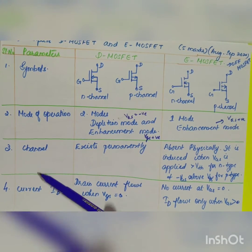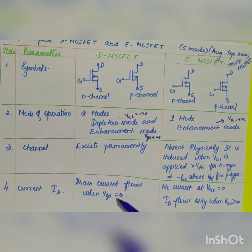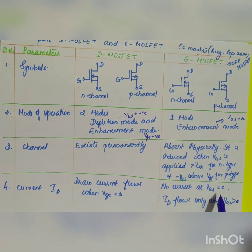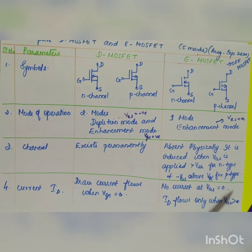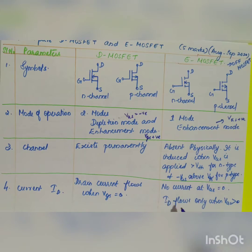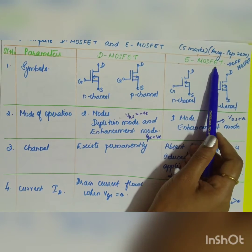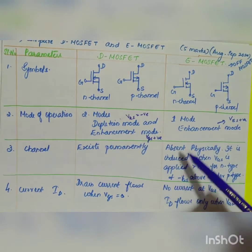The last difference is regarding drain current ID. In the Depletion MOSFET, drain current flows when VGS is equal to zero. In the Enhancement MOSFET, drain current does not flow when VGS is zero — it only starts to flow once VGS attains the threshold value. Since there is no channel by default, the Enhancement MOSFET is also generally called an OFF MOSFET.